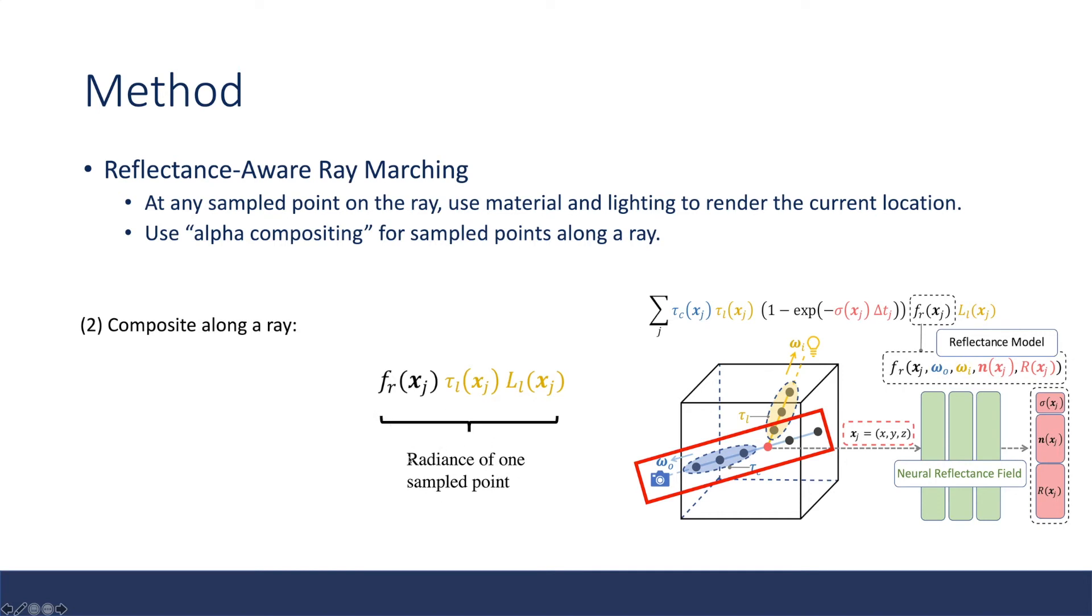Now we have the radiance of one sample point. We want to composite along a ray. This part is similar to NERF. We times the density of the sample point at this sample location, and we time the transmittance or visibility of this point. It basically means, after coming along all the previous points, how visible is this point here? And then we do this integral.